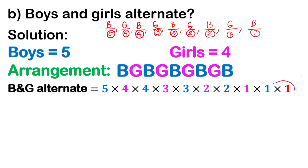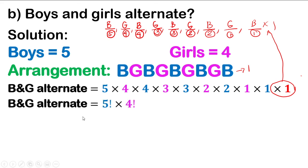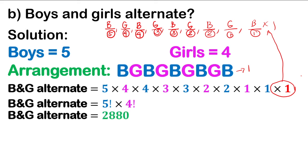Where does the 'times 1' come from? That is our one acceptable arrangement. So using the fundamental counting principle, that is simply 5 factorial × 4 factorial × 1 factorial, which equals 1. So 5 factorial × 4 factorial = 2,880. Therefore, there are 2,880 ways for boys and girls to be seated alternately.